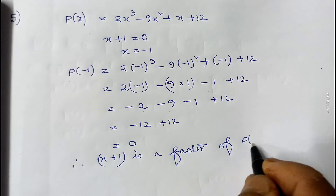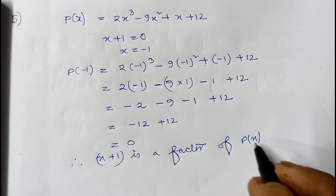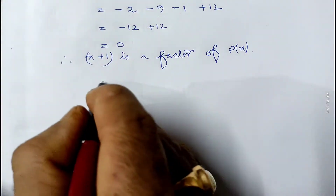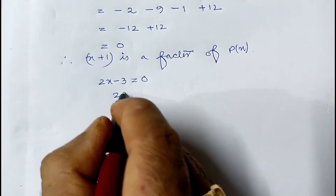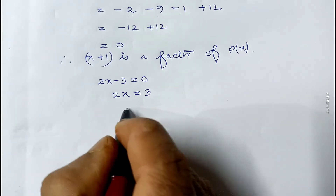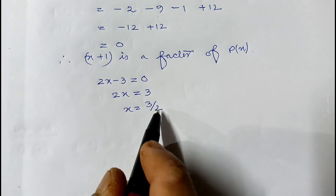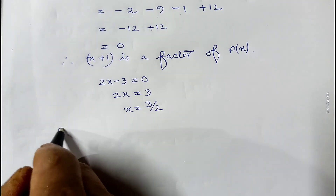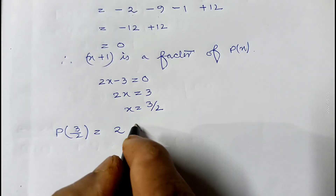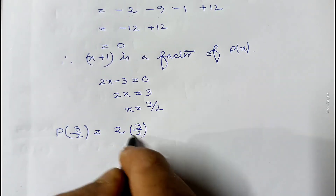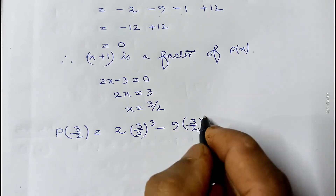Now we check that 2x minus 3 is also a factor of the given polynomial. We make 2x minus 3 equal to 0, so 2x equals 3, giving x equals 3 by 2. We replace x by 3/2 in the polynomial: p(3/2) equals 2 times (3/2) cubed minus 9 times (3/2) squared plus 3/2 plus 12.